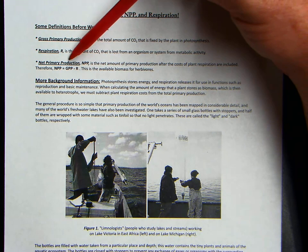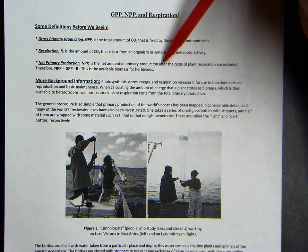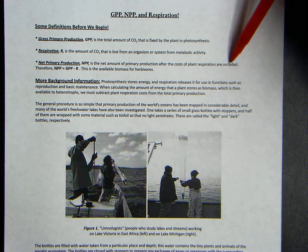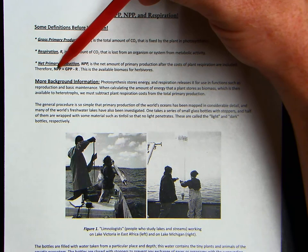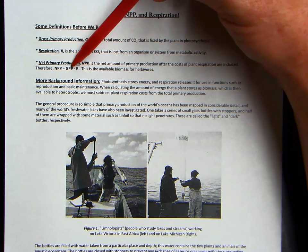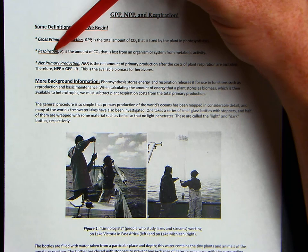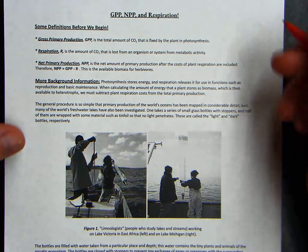So the net primary productivity is the net amount of primary productivity after the cost of plant respiration are included. Therefore, NPP equals the gross minus the respiration.